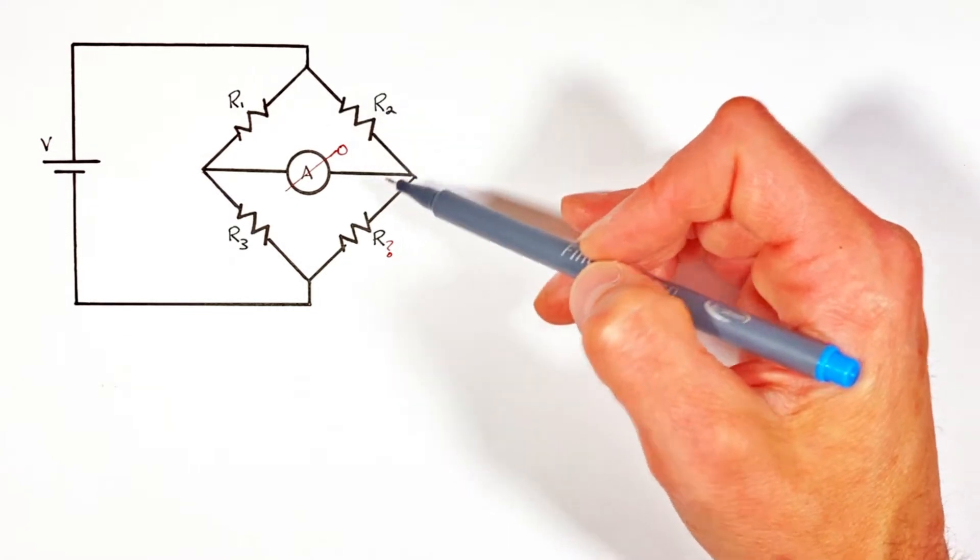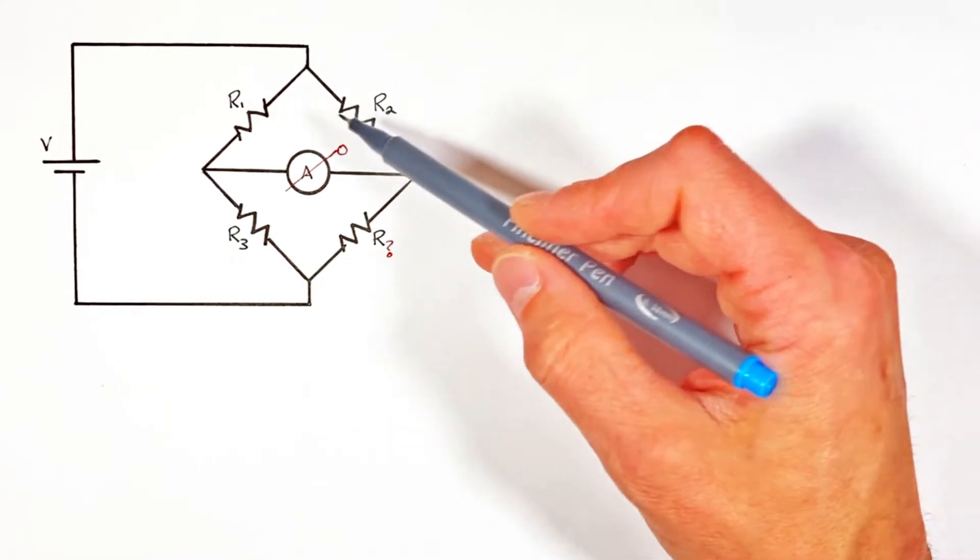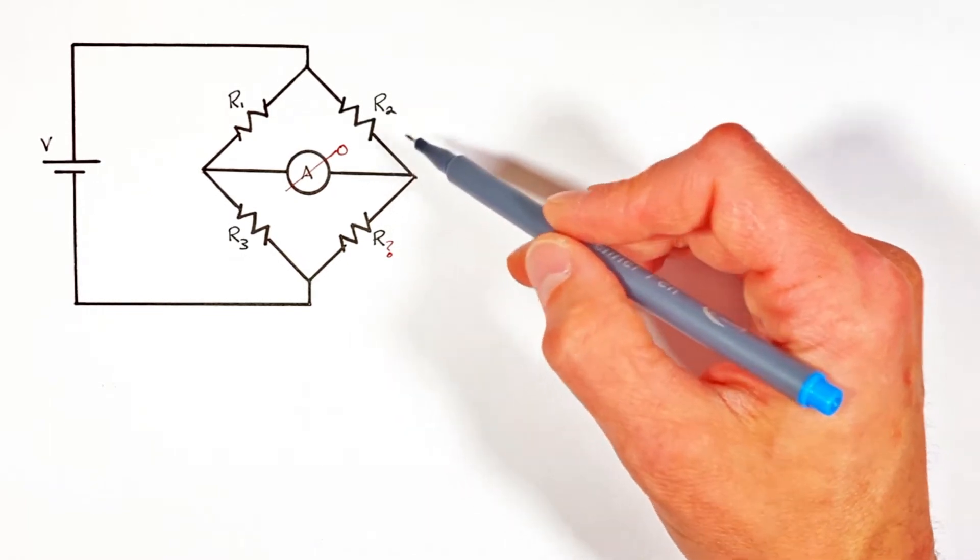I don't want to get into any of that today. I just want to apply Ohm's law to this and some good old-fashioned logic to come up with this value for this variable resistor.